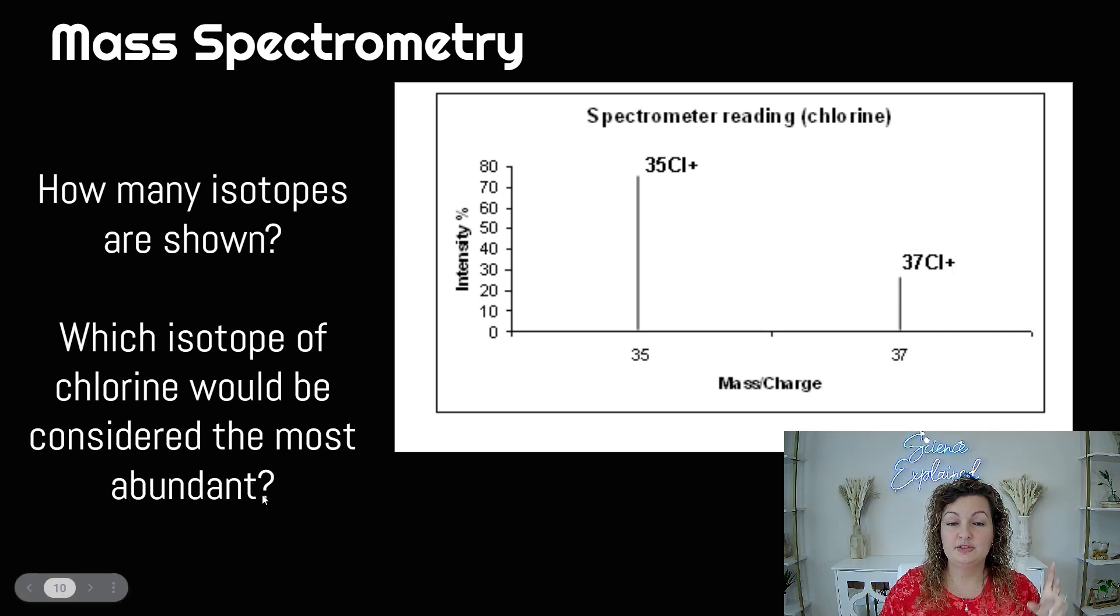If we're looking for the most abundant, we're looking for the most out there in our universe, the most intensity. So chlorine-35 is going to be the one that is a lot higher up on our graph than chlorine-37.